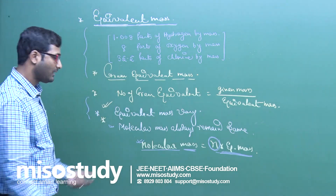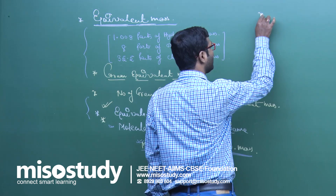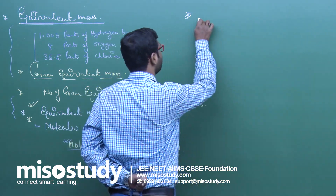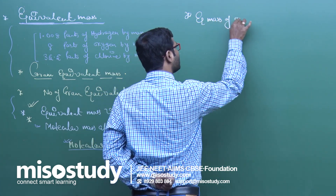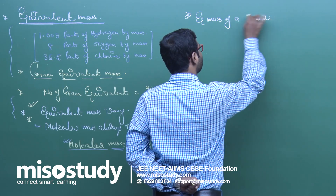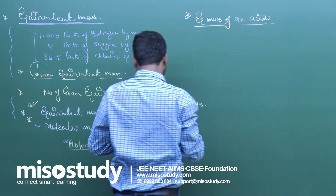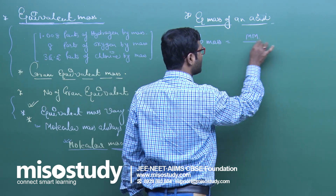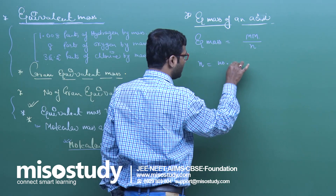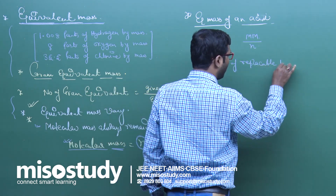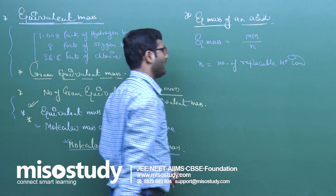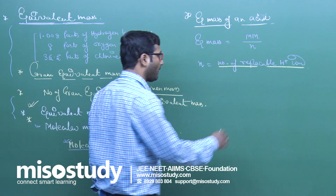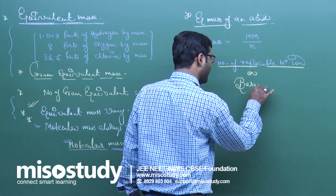This is the general expression of equivalent mass. Now I will discuss how to find the equivalent mass of acids, bases, salts, and oxidizing and reducing agents. For equivalent mass of an acid, the formula is: equivalent mass = molecular mass divided by N, where N is the number of replaceable H⁺ ions, also known as basicity.